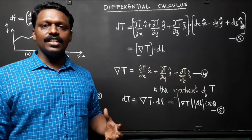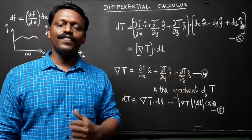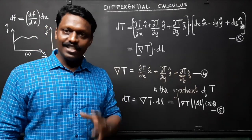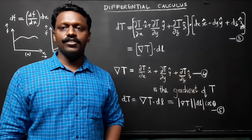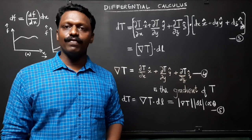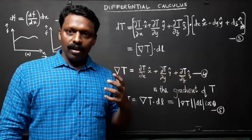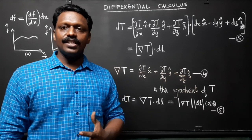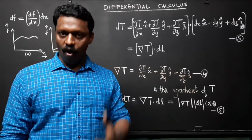This can be written as ∇T · dl, which is equation 3, where ∇T equals (∂T/∂x)x̂ + (∂T/∂y)ŷ + (∂T/∂z)ẑ. This ∇T is the gradient of T. ∇T is a vector quantity with three components. It is the generalized derivative we have been looking for.